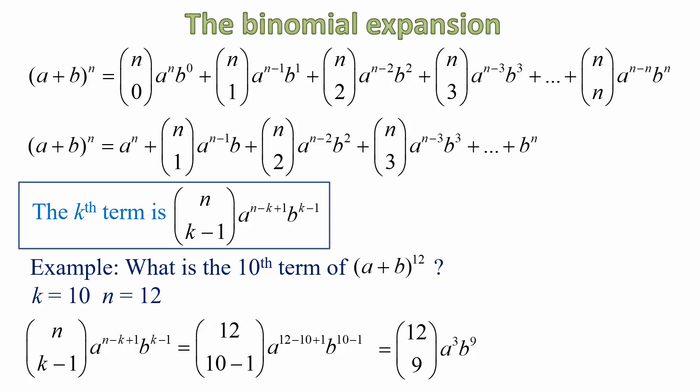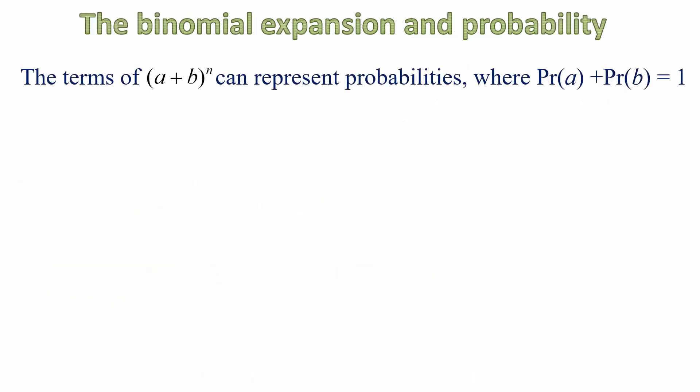And that is the 10th term. And of course, we can work out what 12, 9 is as a normal number. It comes out to be 220. So the 10th term of the expansion to A plus B to the power of 12 is 220 A cubed B to the power of 9. Now, all that is leading to probability and how the binomial expansion relates to that.